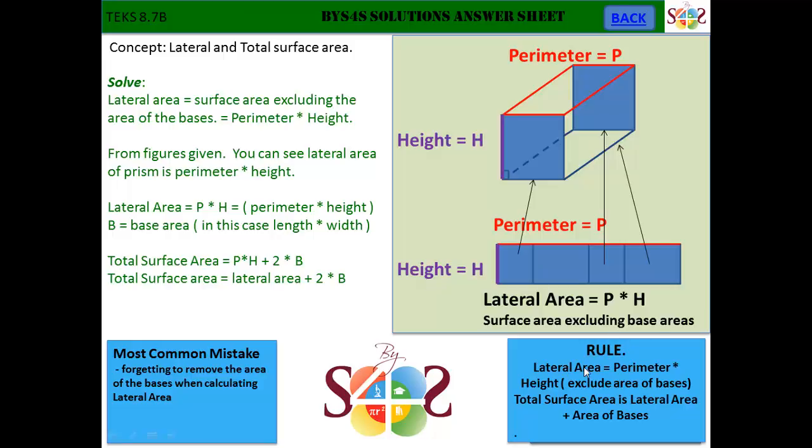Lateral, per the rule, area is the perimeter times the height. The perimeter is the area highlighted here in red that I'm outlining. That's the perimeter of this figure and the height is this vertical distance here.